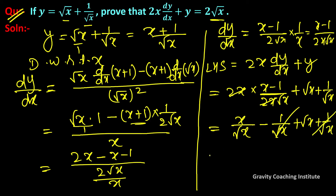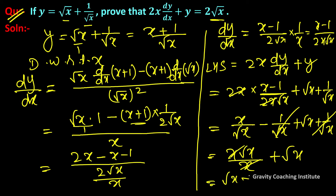And after cancellation this fraction splits up. So here x root x upon x minus x plus root x, so x cancels, root x plus root x is equal to 2 root x, which is RHS. Hence proved.